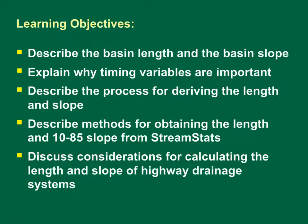This training module has five learning objectives. At the end of this module, you should be able to: describe the basin length and basin slope; explain why timing variables are important; describe the process for deriving the length and slope; describe methods for obtaining the length and 1085 slope from StreamStats; and discuss considerations for calculating the length and slope of highway drainage systems.